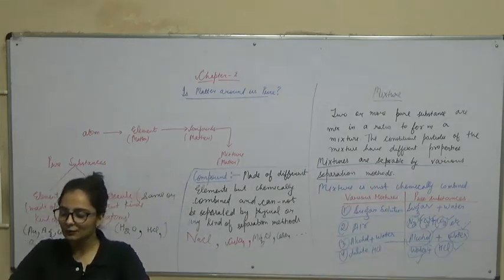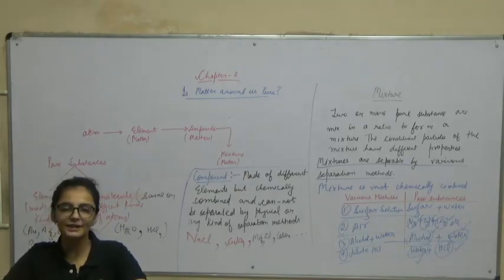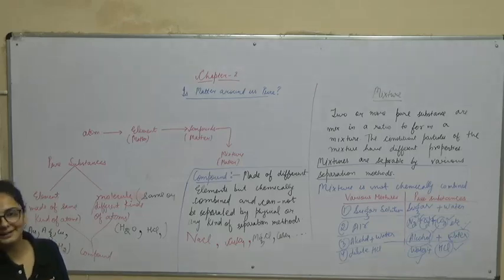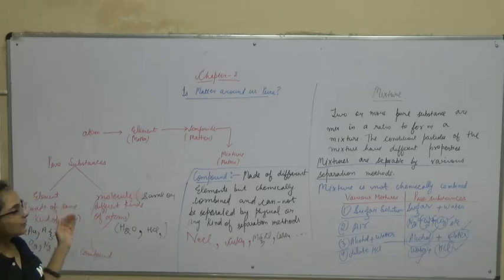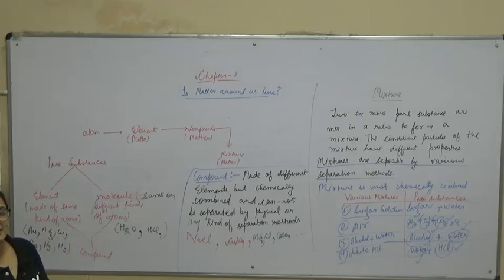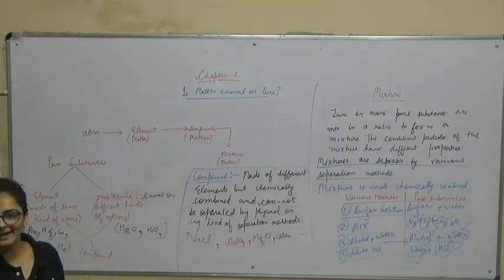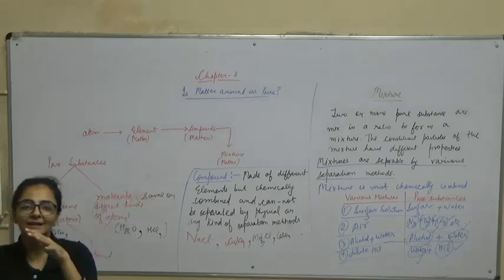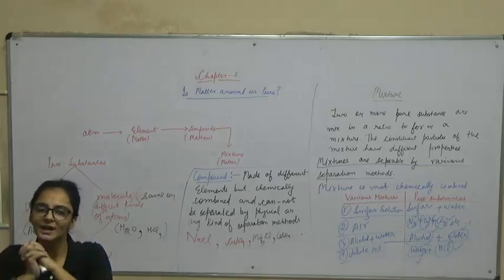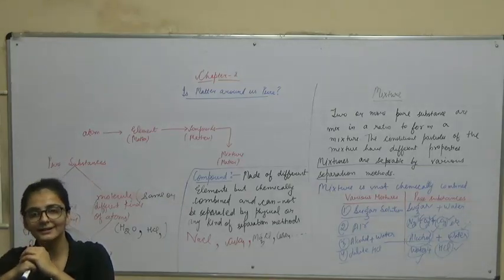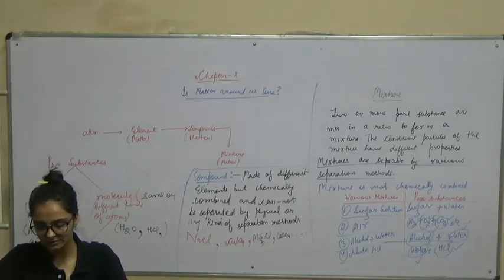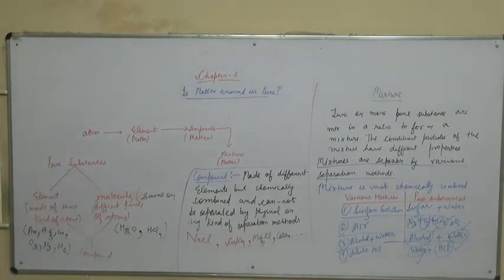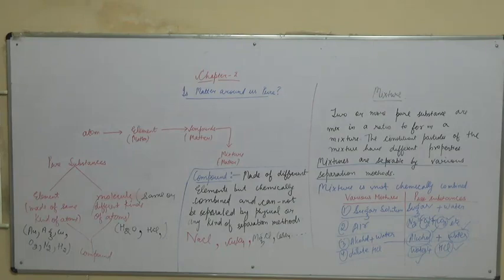That was all about today's class on chemistry — the introduction to 'Is Matter Around Us Pure?' We first discussed purity, then pure substances. Then we covered the categories within pure substances: elements, molecules, and compounds. We defined each with examples, then discussed mixtures and some differences between mixtures and compounds. We will talk about the types of mixtures in the next lecture. Thank you so much.